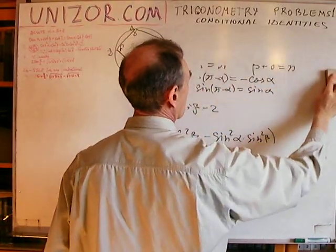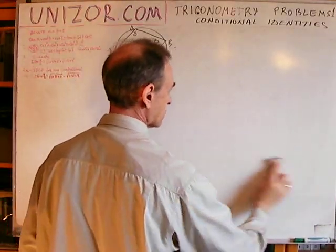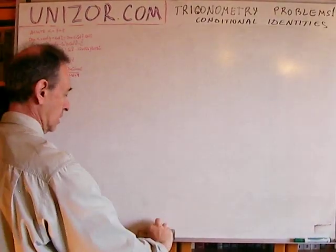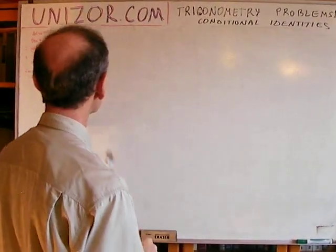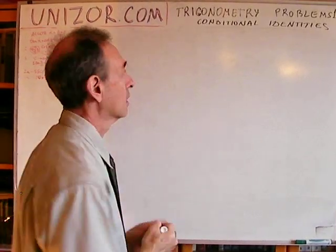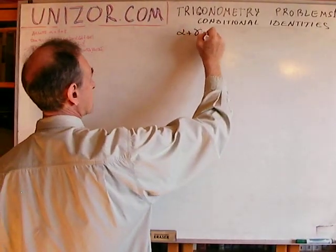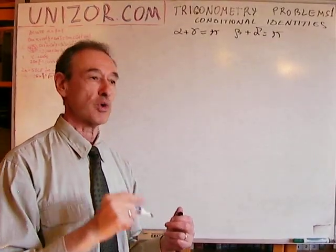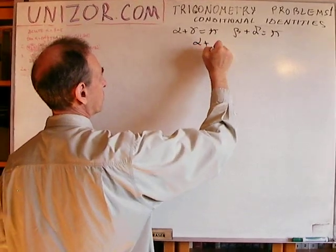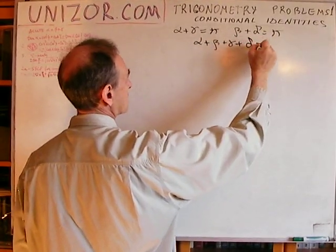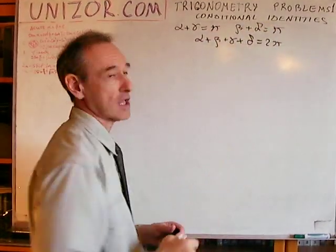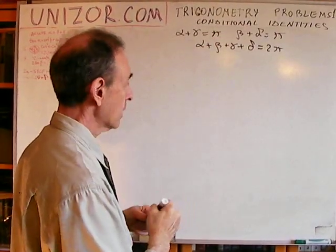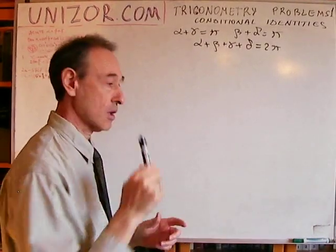As an exercise for those not afraid of long calculations: the same theorem is true not only when α + γ = π and β + δ = π, but also under the weaker condition that α + β + γ + δ = 2π. From the pair of equations the sum follows obviously, but not the other way around. The theorem, however, holds even under this weaker condition — try to prove it yourself.